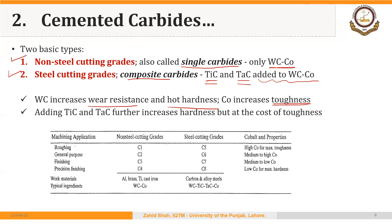For comparison: non-steel cutting grades have typical ingredients of tungsten carbide and cobalt, and are used to machine aluminum, brass, titanium, and cast irons. Steel cutting grades have typical ingredients of titanium carbide and tantalum carbide in addition to tungsten carbide and cobalt. These have alphanumeric designations — C1, C2, C3, C4 for non-steel cutting grades, and C5, C6, C7, C8 for steel cutting grades.